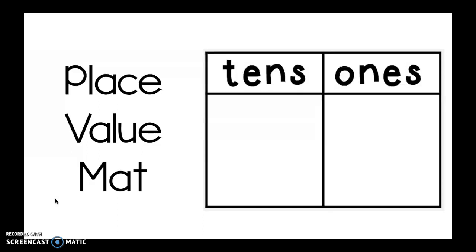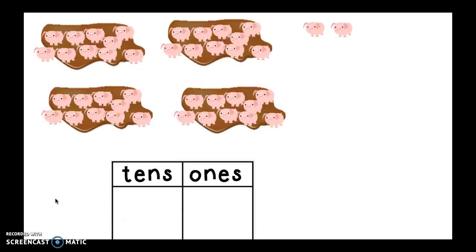So here we go. I took my place value mat and I brought it back to my piggies. And if you'll see, there are two parts, tens and ones. We already know how to use this, but it's a nice refresher. So the first thing I'm going to do is I'm going to count how many groups of tens there are in my drift of pigs. So I have one, two, three, four. So I'm going to go ahead and fill it in to say four tens.